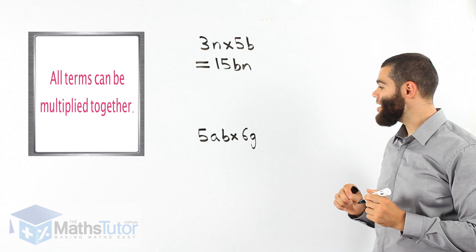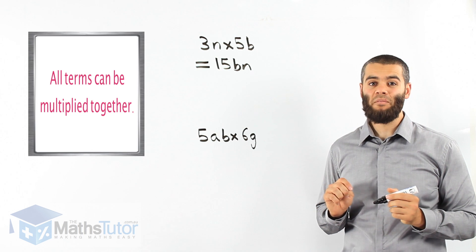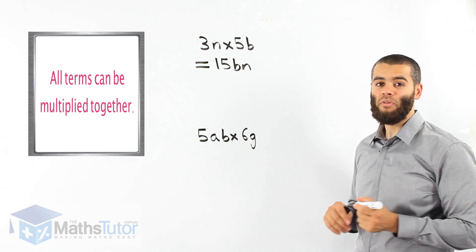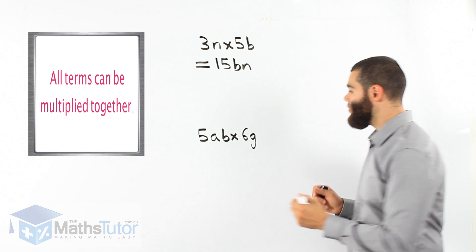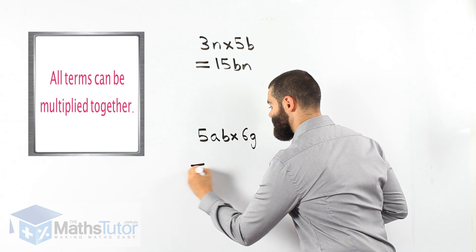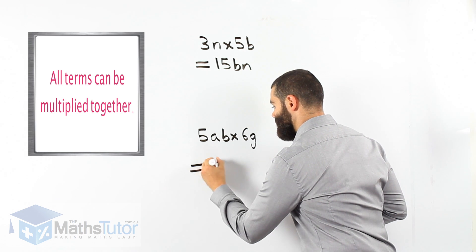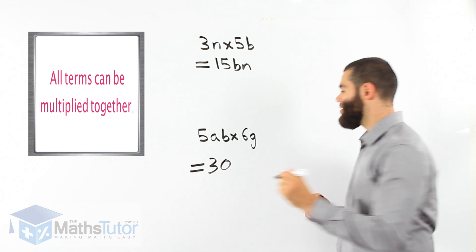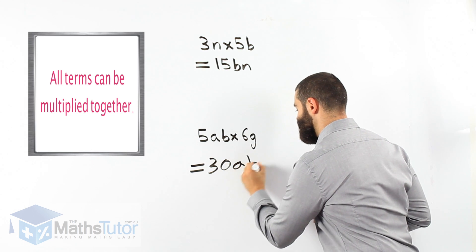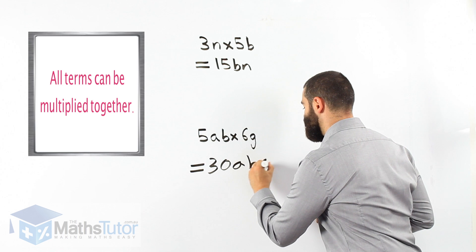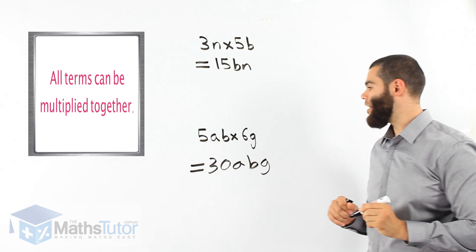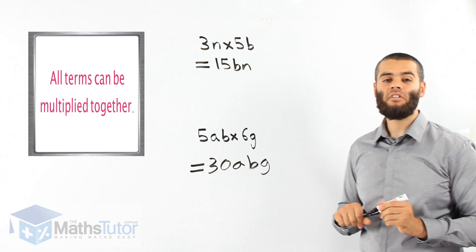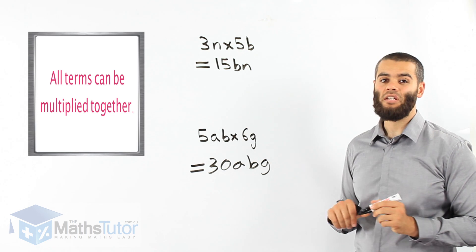Here we have 5ab times 6g. Again we just multiply the numbers: 5 times 6 is 30, and we don't forget our pronumerals a, b, and g. So 5 times 6 is 30abg.